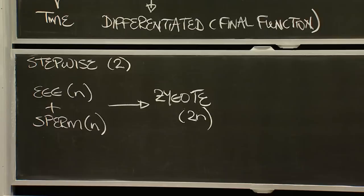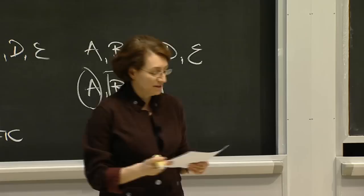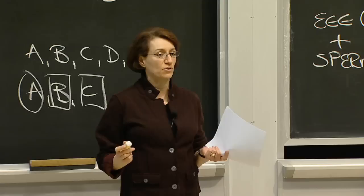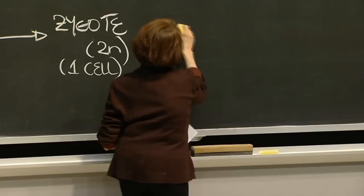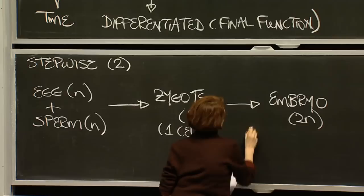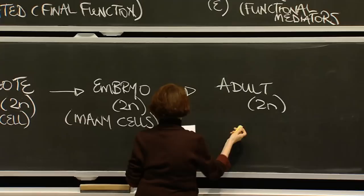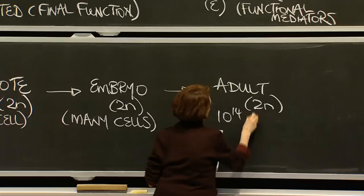This zygote, which is a single cell, is a magical cell because it contains all the information necessary to form whatever organism is going to be the outcome. The zygote goes on to form a diploid embryo containing many cells, and the embryo goes on to form the diploid adult, also with many cells. In humans, there are about 10 to the 14th cells in the human adult.